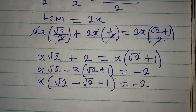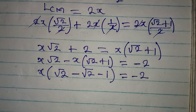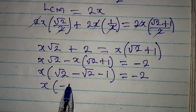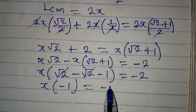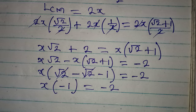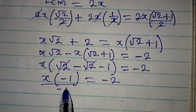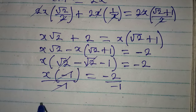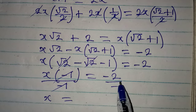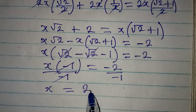The root 2 terms cancel, leaving x times negative 1 equals negative 2. Dividing both sides by negative 1, x equals negative 2 over negative 1, which gives us positive 2.